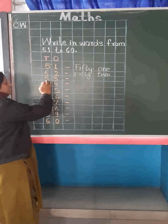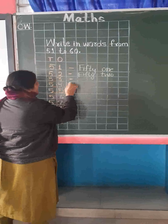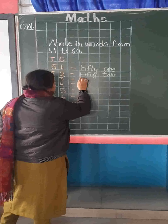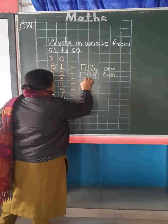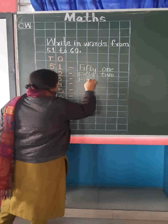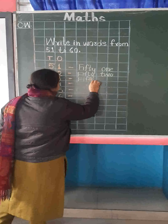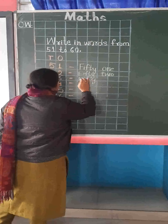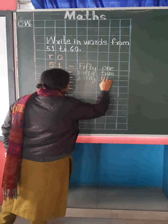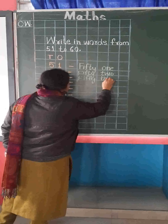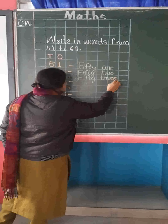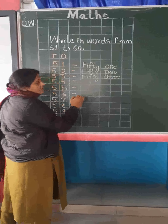Now here the number is 53. So we will write here the spelling of 50, and here we will write the spelling of 3. This one is 53.